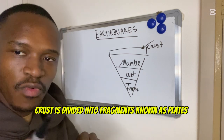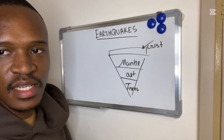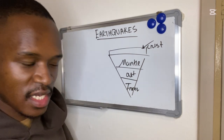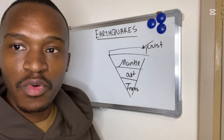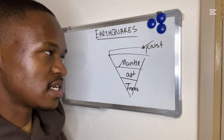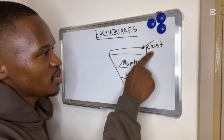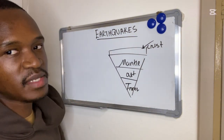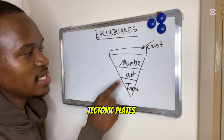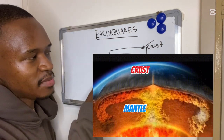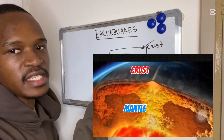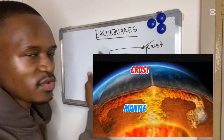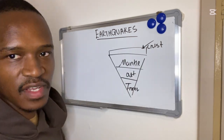These plates are moving around. We have the theory of continental drift, which says that our continents are moving at approximately 2 centimeters every year. The crust is made up of plates, and these plates float above the molten mantle — meaning the mantle is in a liquid state. The rock is in a liquid state; it is magma, it is very hot.